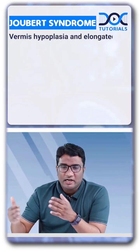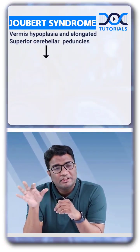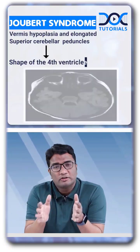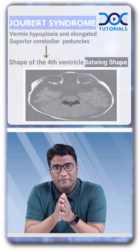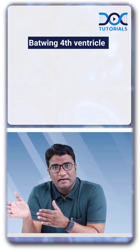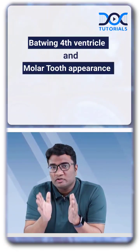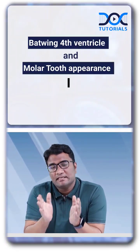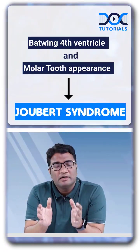Because of the vermis hypoplasia and the elongated superior cerebellar peduncles, the shape of the fourth ventricle also takes the shape of a batwing. So a batwing fourth ventricle and a molar tooth appearance on MRI brain is suggestive of Joubert syndrome.